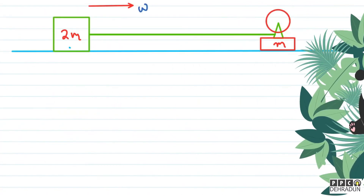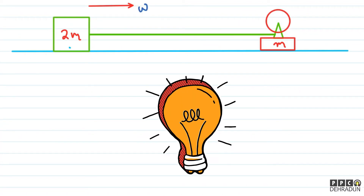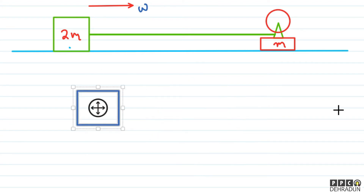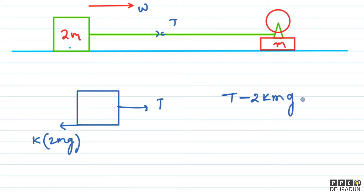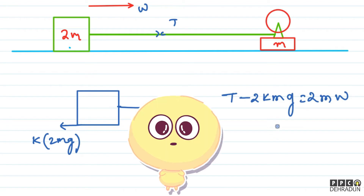So, children, here we can draw a free body diagram. Let's first draw the free body diagram for the 2M block. For 2M, we can show that the force of tension is acting on it. Also, since 2M is moving to the right, kinetic friction will act to the left, whose value will be k times the normal force — normal being 2Mg. So our equation becomes: Tension minus 2kMg equals 2M times acceleration W.